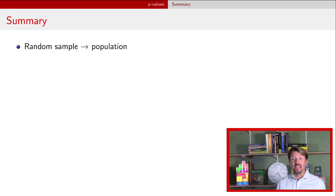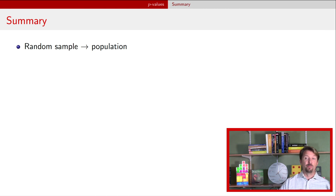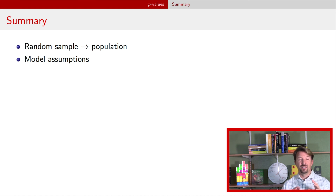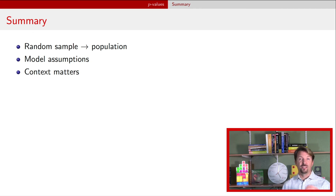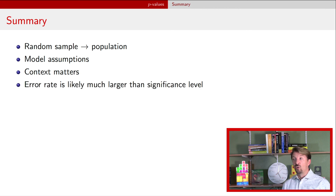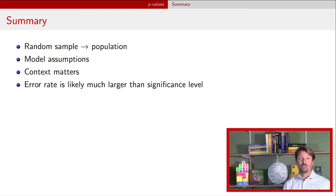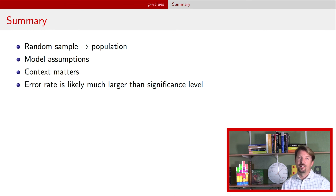Now back from the app, let me summarize quickly. First, you need a random sample in order to make a statement about the population. Second, evaluate your model assumptions before placing too much stock in a particular p-value. Third, context always matters — a p-value doesn't mean much outside of the context in which it arose. Finally, the error rate is probably much larger than the significance level you were expecting to be your error rate. I hope you keep watching these videos.